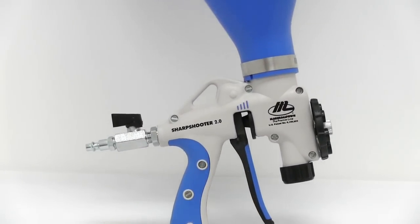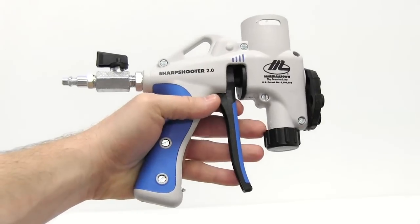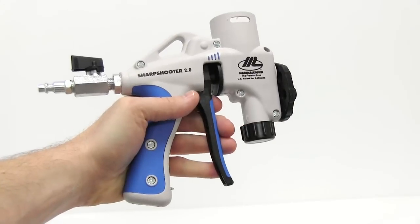Marshalltown's Sharpshooter 2.0 Hopper Gun is upgraded with many features and benefits. The Sharpshooter 2.0 is equipped with a soft grip handle and trigger.